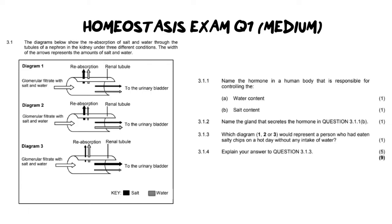So let's just quickly run through it. It says, the diagrams below show the reabsorption of salt and water through the tubules of the nephron under different conditions. Now, the width of the arrows represents the amounts of salt and water that are being reabsorbed. That's a really important piece of information because we need to now focus on the width of the arrows.